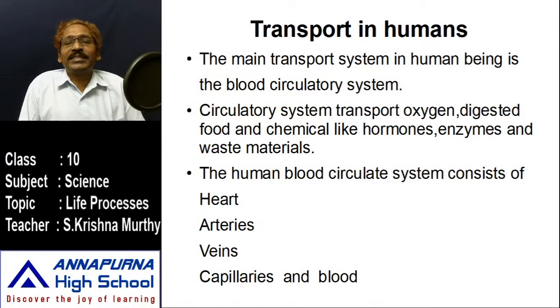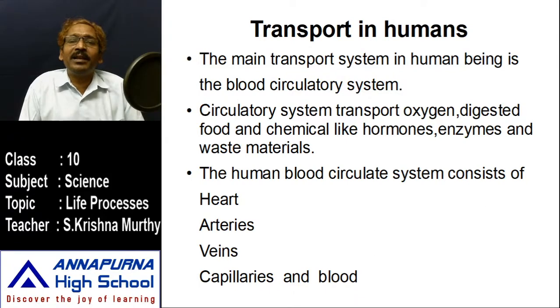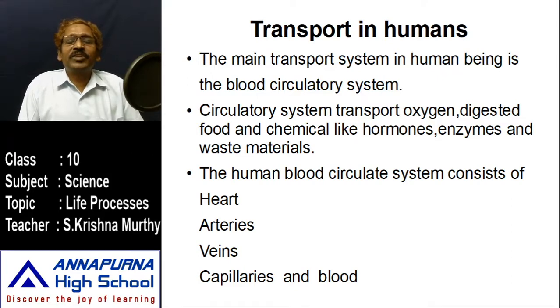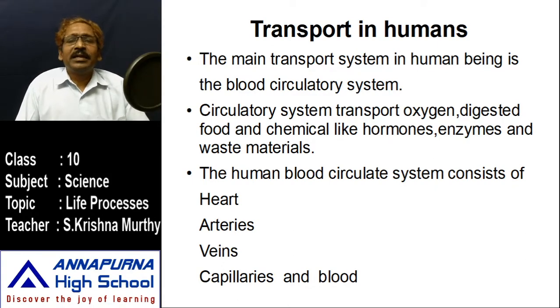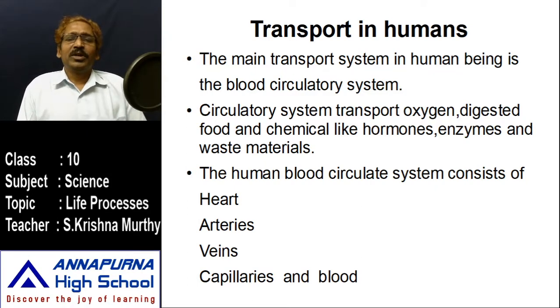The human body has two kinds of transport systems. One is the circulatory system and another one is the lymphatic system. The first one, which is playing a crucial role, is called the circulatory system. Circulation means transportation. The circulatory system consists of different kinds of organs to transport material from one part to another.